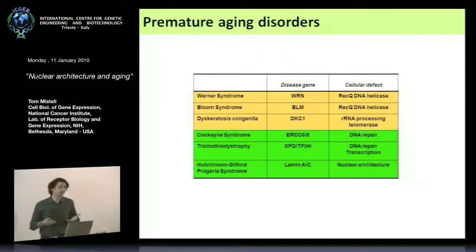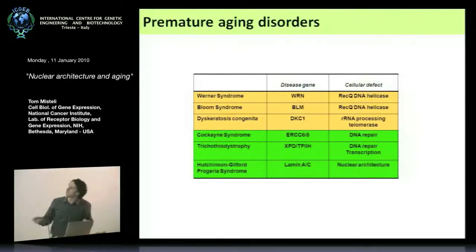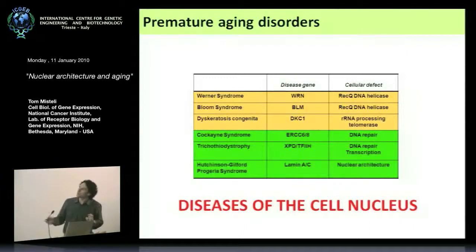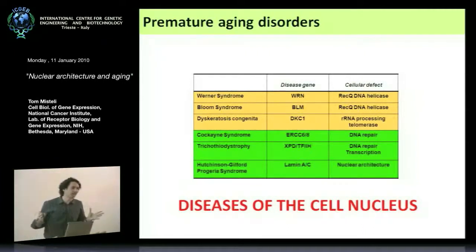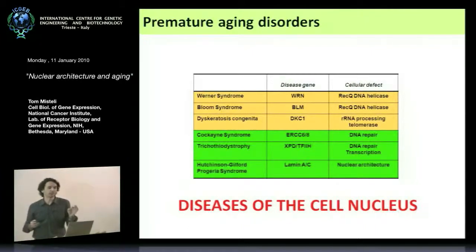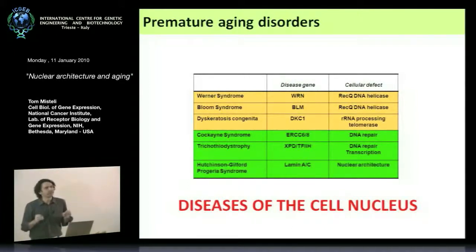There are six diseases generally considered premature aging diseases. Most of these are actually DNA repair diseases — they have something to do with DNA repair. What's interesting from our point of view is that they all affect processes in the cell nucleus. This doesn't mean all of aging happens in the nucleus — there's very good evidence that mitochondrial function is important for aging — but it is interesting that all known premature aging diseases in humans have something to do with the cell nucleus.